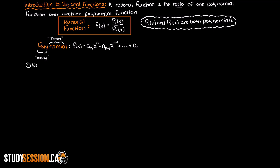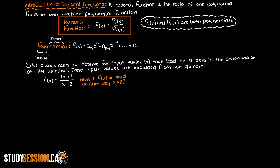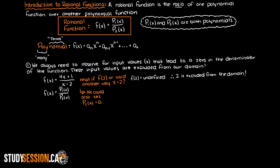Firstly, we are looking for any input values of x that could allow our denominator to equal 0. These inputs are excluded from our domain, meaning that they are not a valid input to our function because they do not give us an appropriate output. So let's say we have this function here. If x is equal to 2, then this function becomes undefined, and because of this we know that 2 must be excluded. A simpler way to do this is to set polynomial 2 equal to 0 and directly find what inputs will not work due to them turning the denominator to 0.